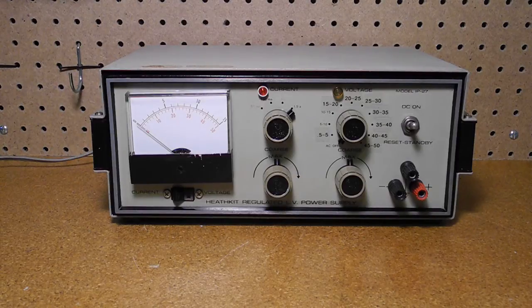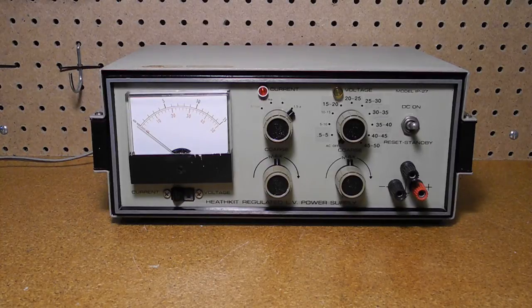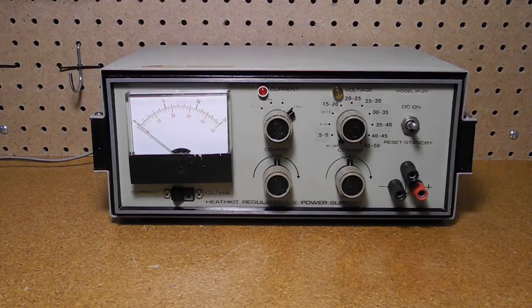It was produced from 1968 to 1975 and offered as a kit or factory assembled, the factory assembled version being the IPW27.